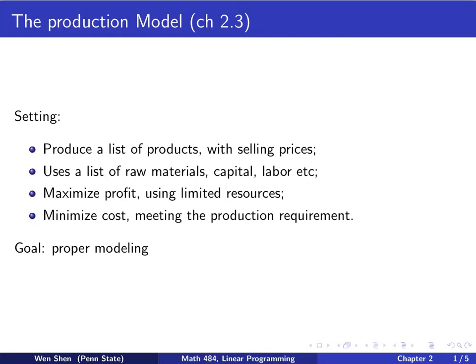This type of model is called the production model. Let's take a look at the setting. So you are a producer, you are supposed to produce a list of products. There could be several of them, and each of them will have a price you can sell and you also know what is the profit you will make for selling each of them.